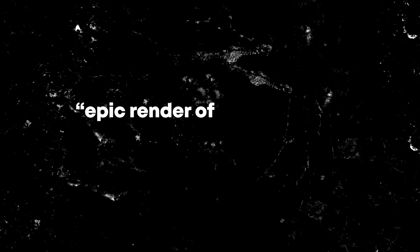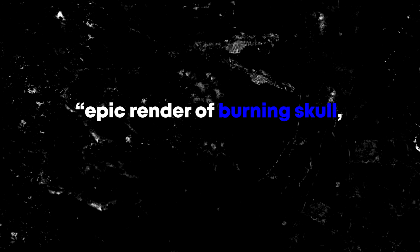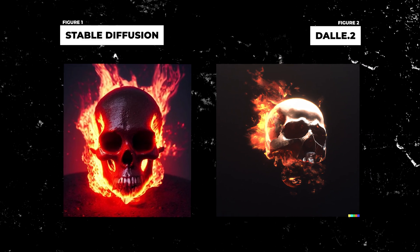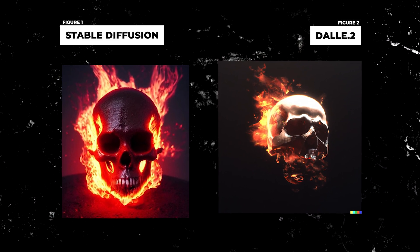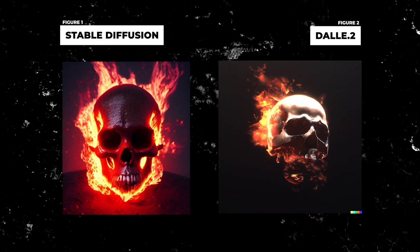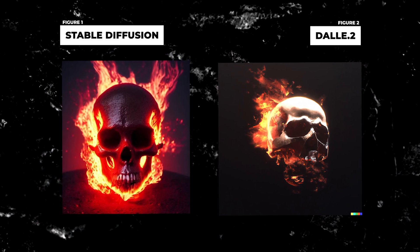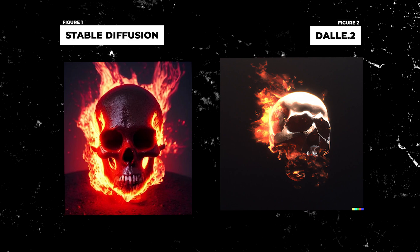Let's now try out both models using similar prompts and see which one creates the best images. Starting off with renders, both models were given the prompt 'Epic Render of Burning Skull, Octane Render.' The images from both models are on point. The fire on the photo created by DALL-E 2 doesn't look as real as the one on Stable Diffusion, and you can see the texture on the skull created by Stable Diffusion.